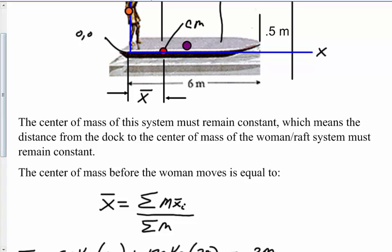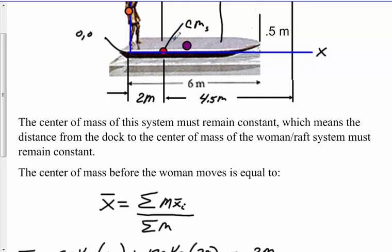Going back to the problem, we know this distance is 2 meters. The distance from the pier edge to the center of mass is 0.5 plus 4 — since 6 minus 2 equals 4 — giving us 4.5 meters. As she moves to the right, the raft moves to the left, because this 4.5 meters is never going to change — it's constant. The distance from the edge of the pier to the center of mass is 4.5 meters, and that will not change.